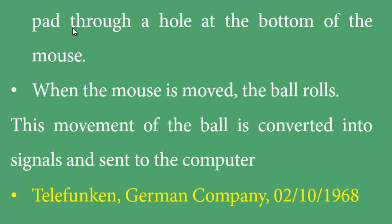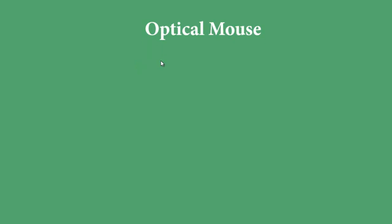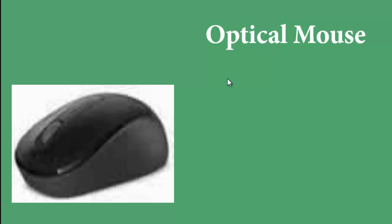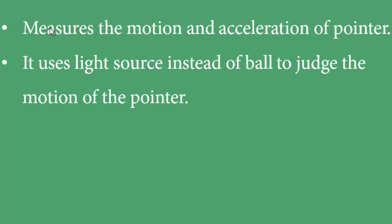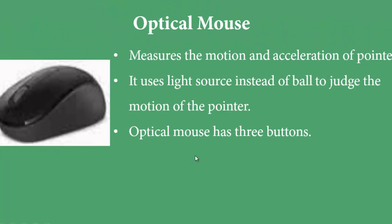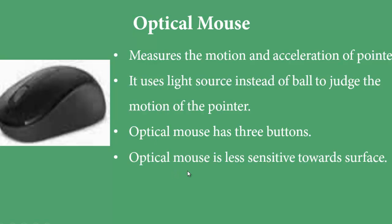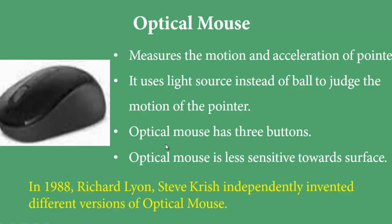The optical mouse uses light instead of a ball to judge the motion of the pointer. It has three buttons: right, left, and a middle scroll button. Optical mouse is less sensitive to surface quality, so the surface must be smooth. It was invented by Richard F. Lyon and Steve Kirsch in 1988, who developed different versions.